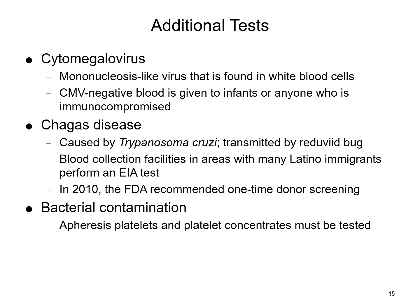Additional testing includes cytomegalovirus, or CMV — a mononucleosis-like virus found within white blood cells. CMV-negative blood should be given to infants or anyone who is immunocompromised, so you may occasionally get special requests for CMV-negative units.